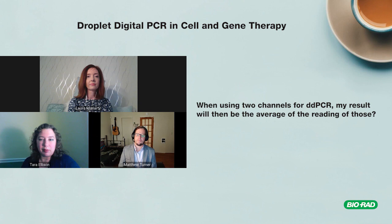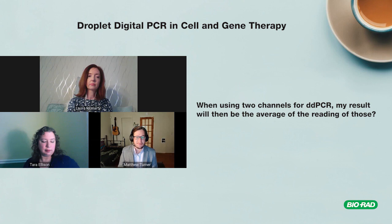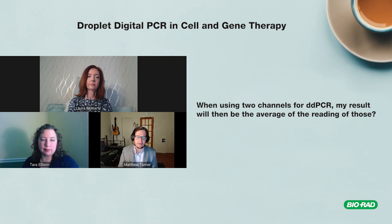If you were actually looking at the same content in both channels you could argue you could average them together, but that's a less common situation. Some people design one assay for the front end of a gene and one for the end to confirm both assays are running equivalently. If they're very equivalent and both high efficiency, technically you could average them, though it's not commonly encountered.